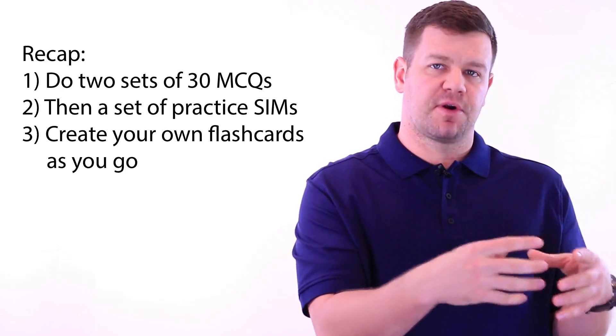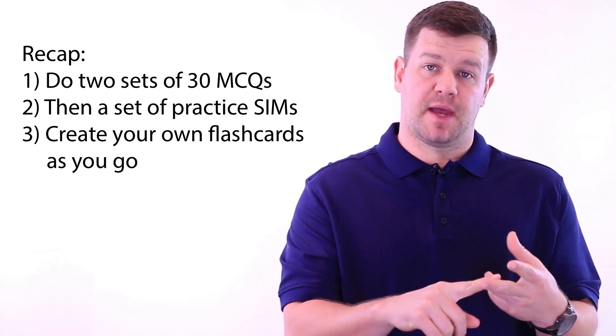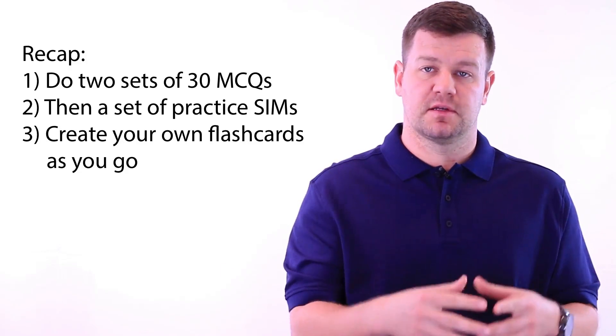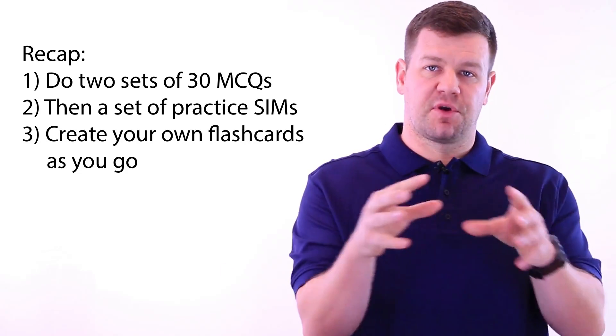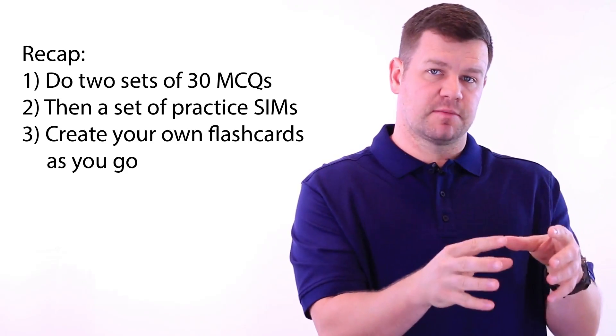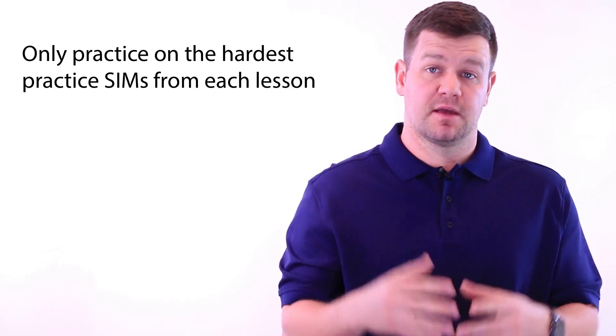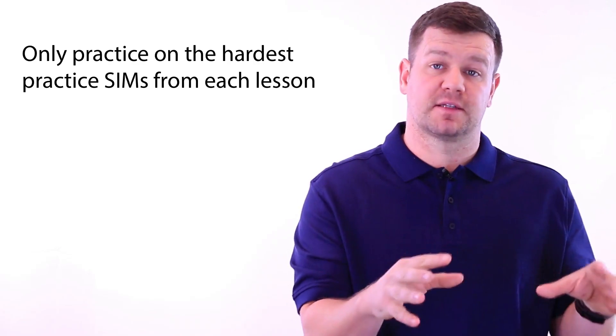To recap: do sets of 30 MCQs, two at a time back to back — so 60 MCQs. Take a break in between and read through the explanations, and make your flashcards for the ones you missed. Then for each two sets of MCQs, do a set of practice SIMs. When it comes to practice SIMs, seek out the hardest ones, because the SIMs on test day are going to be harder and nastier than the practice SIMs in your review course. Break them into pieces until you understand them — usually that means journal entries — and make your own flashcards. So the general format is: two sets of MCQs, one set of practice SIMs.